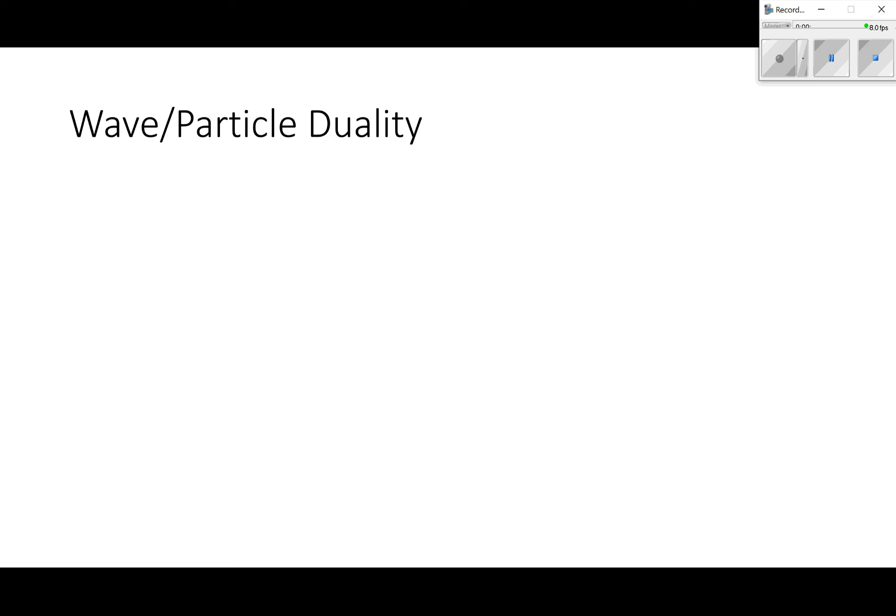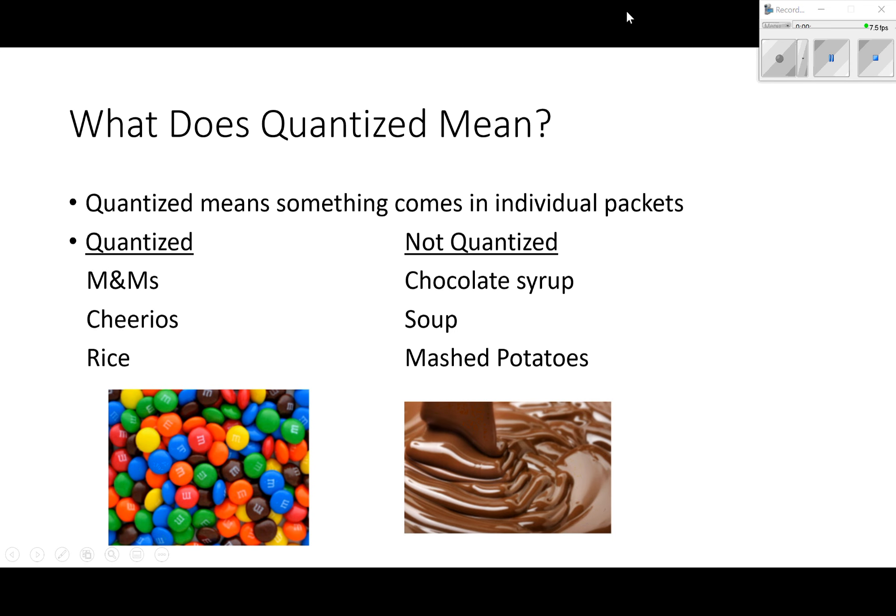Wave-particle duality. So first of all, what does quantized mean? Quantized means something comes in individual packets. Something that's quantized is M&Ms. An equivalent thing that's not quantized is chocolate syrup. The question is, could you have one M&M? Yes, then it's quantized. Could you have one chocolate syrup? I mean, you could have a bottle of chocolate syrup, you could have a spoon of chocolate syrup, but you can't have one chocolate syrup, so that's not quantized.